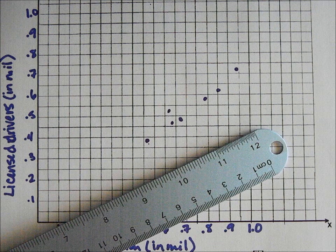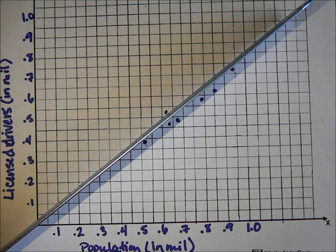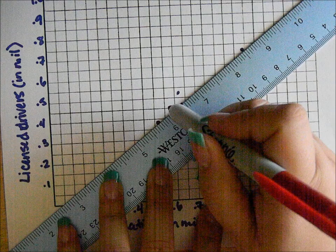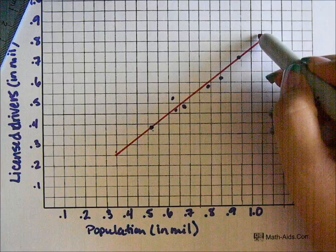Once you've plotted your points, find something that is straight so that you can test where you're going to place your line. I'm using a ruler. By holding the ruler on the opposite edge going through the side of the graph, I can see the positioning of my ruler in relation to my points, and find the best place to put my line. When you've found the best possible location for your line, lay the ruler down and draw your line.